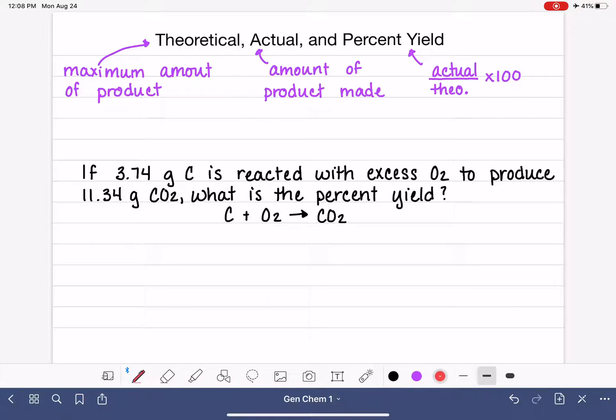Now, the theoretical yield being the maximum amount of product, this is a number that we calculate. So it's like a prediction, and it's calculated from the limiting reactant. And it's just a stoichiometry calculation.